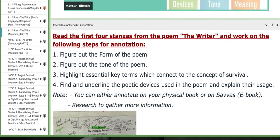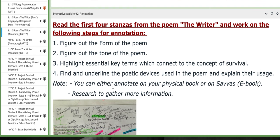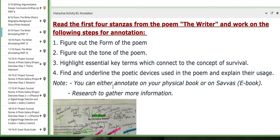So in this interactive activity, you need to work on the following steps for annotation. You need to figure out the form of the poem, the tone, you need to highlight essential key terms and connect it to the concept of survival. You need to underline poetic devices.